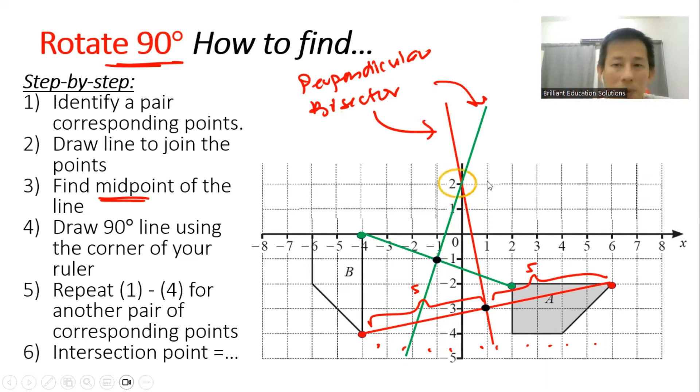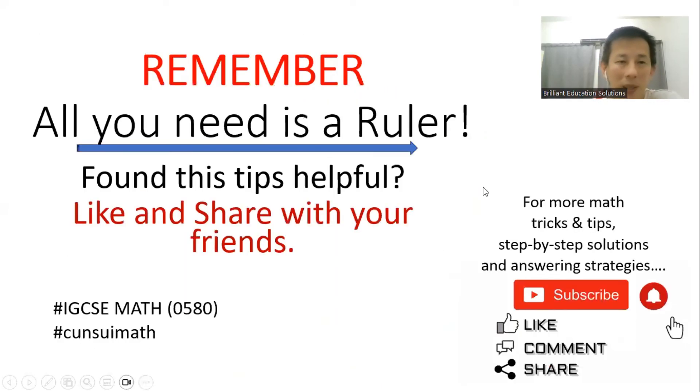The intersection point here will be the center of rotation. Super easy, right? Remember, all you need is a ruler.